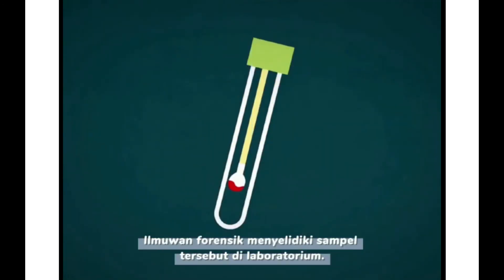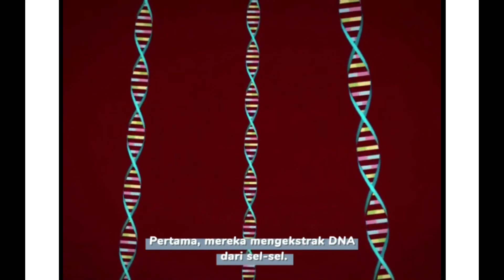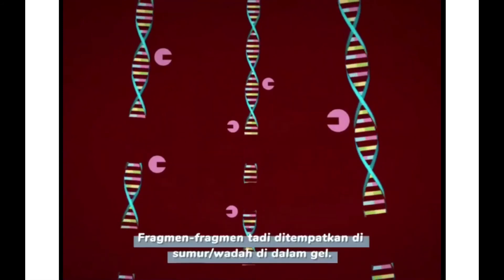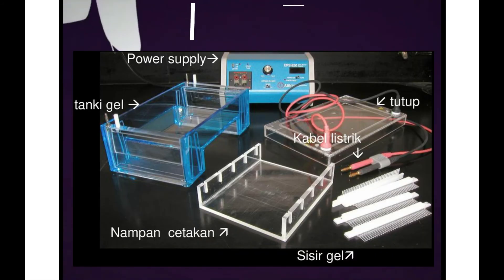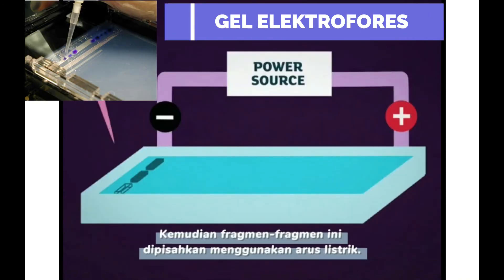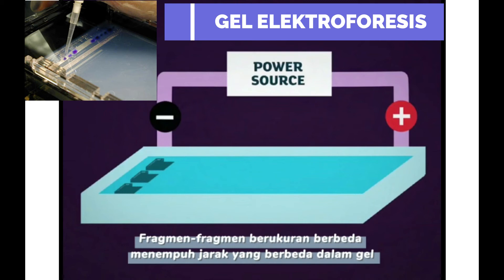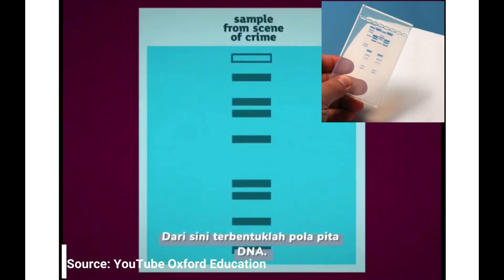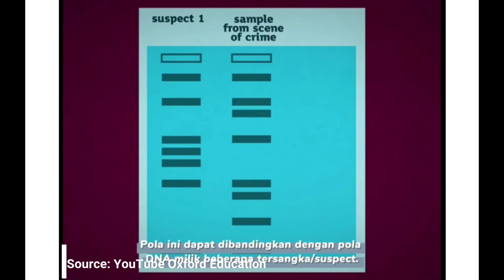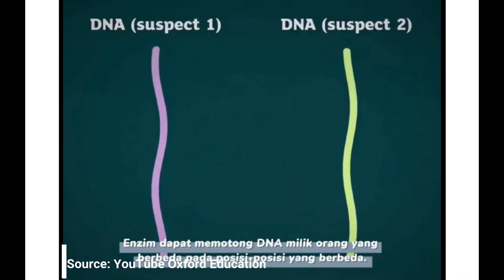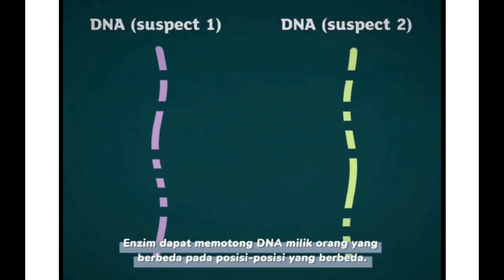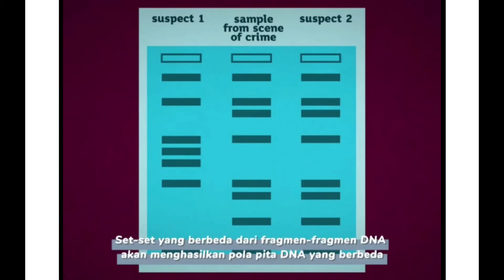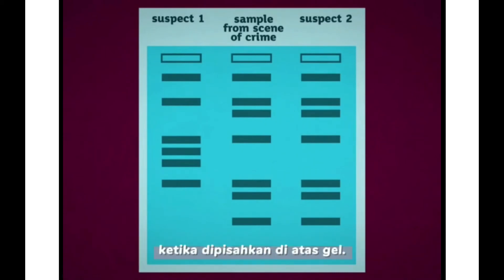Selanjutnya sampel tadi diselidiki oleh laboratorium forensik. Pertama, mereka mengekstrak DNA dari sel-sel yang ada di dalam darah. Kemudian DNA dipotong menjadi fragmen-fragmen yang lebih pendek menggunakan enzim, lalu fragmennya ditempatkan di sumur yang ada di dalam gel dan dipisahkan menggunakan arus listrik. Ukuran fragmennya berbeda dan menempuh jarak yang berbeda pula — fragmen yang paling kecil akan menempuh jarak yang paling jauh. Dari sinilah terbentuk pola pita DNA. Enzim bisa memotong DNA milik orang yang berbeda pada posisi yang berbeda-beda, sehingga terbentuk set berbeda yang terdiri atas beberapa fragmen, dan set-set yang berbeda ini akan menghasilkan pola pita DNA yang berbeda ketika dipisahkan di atas gel.